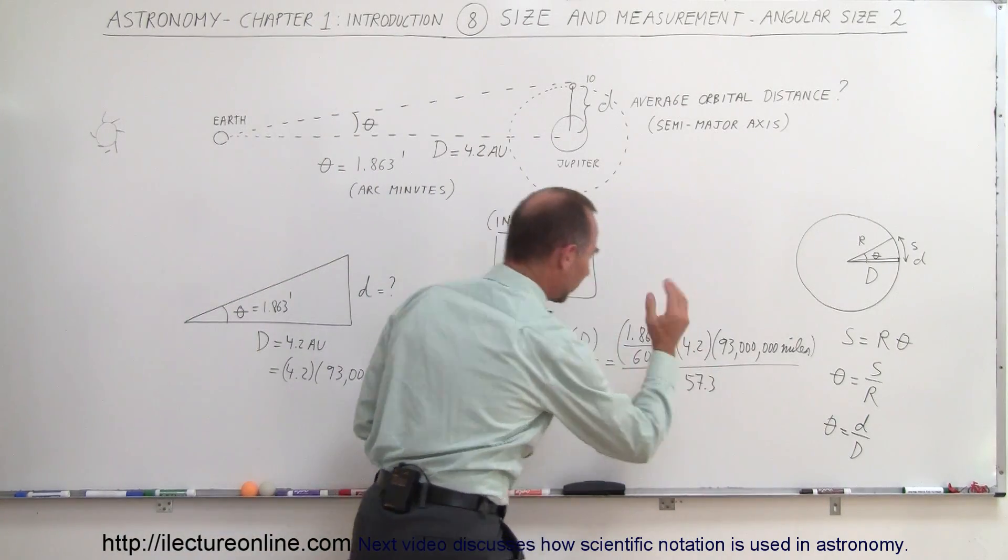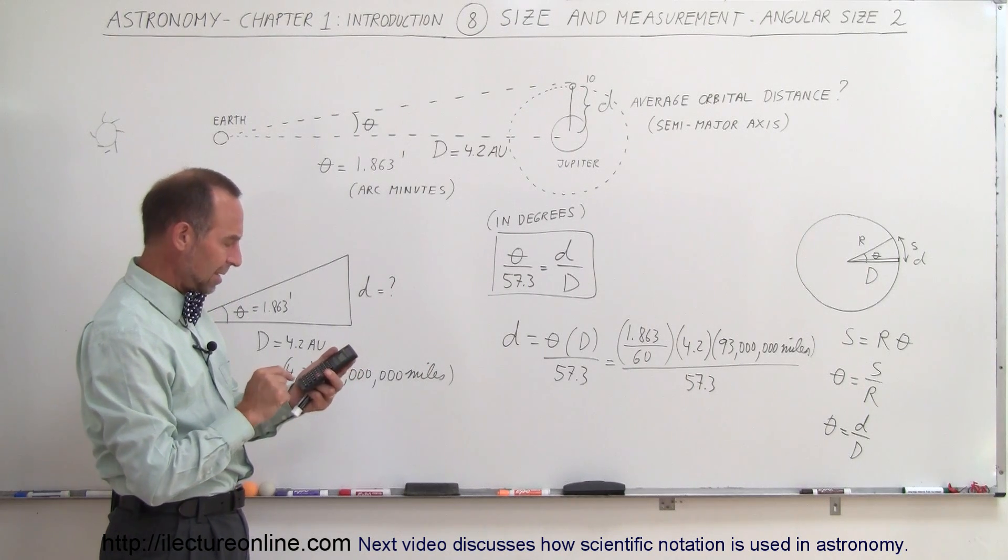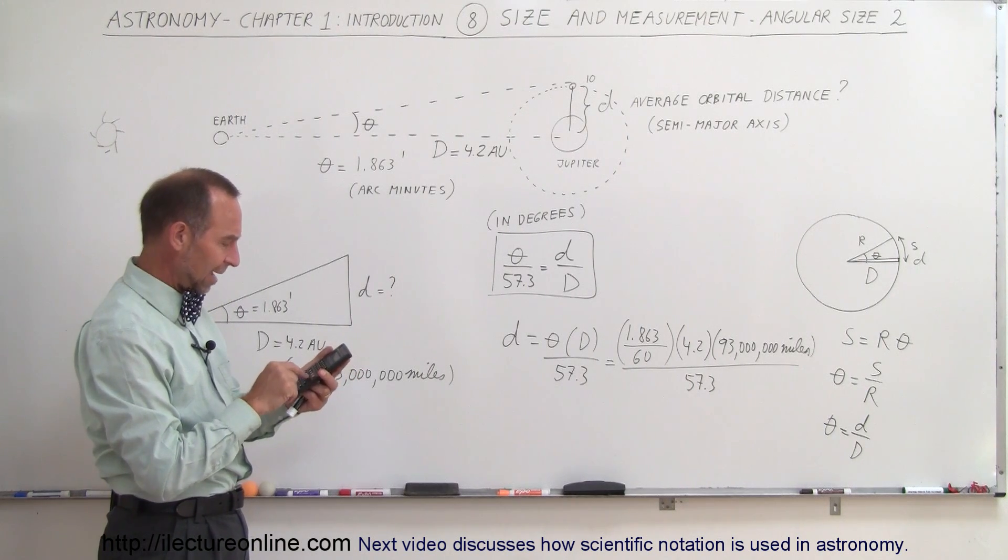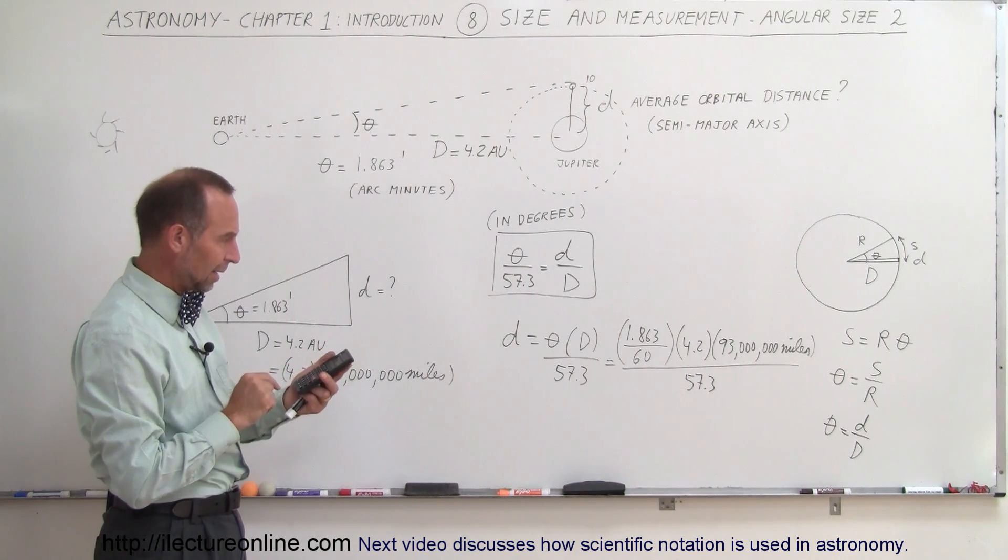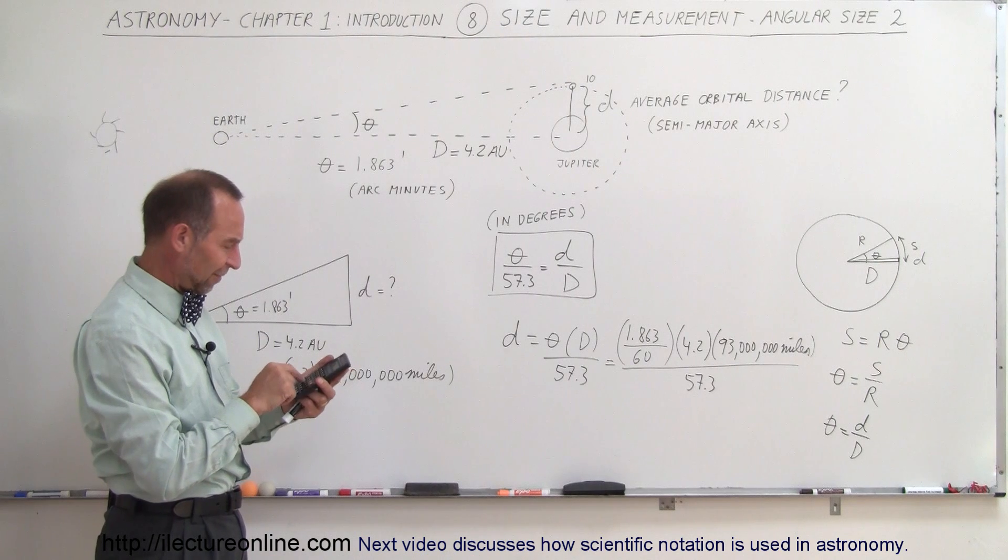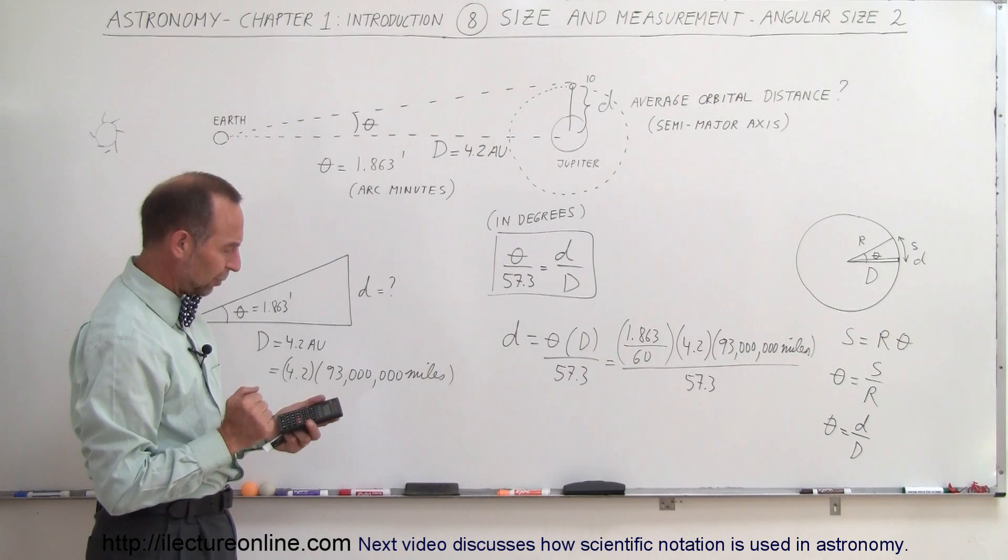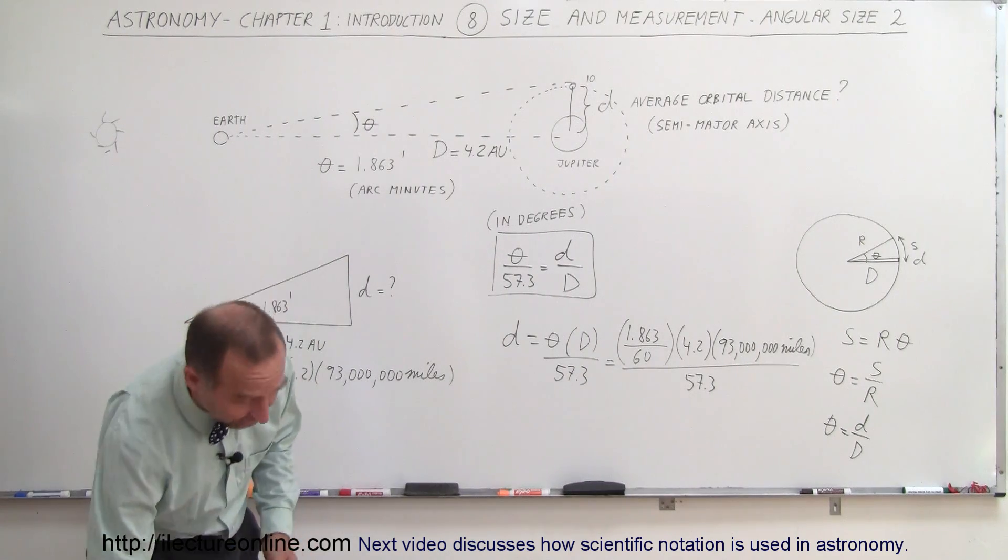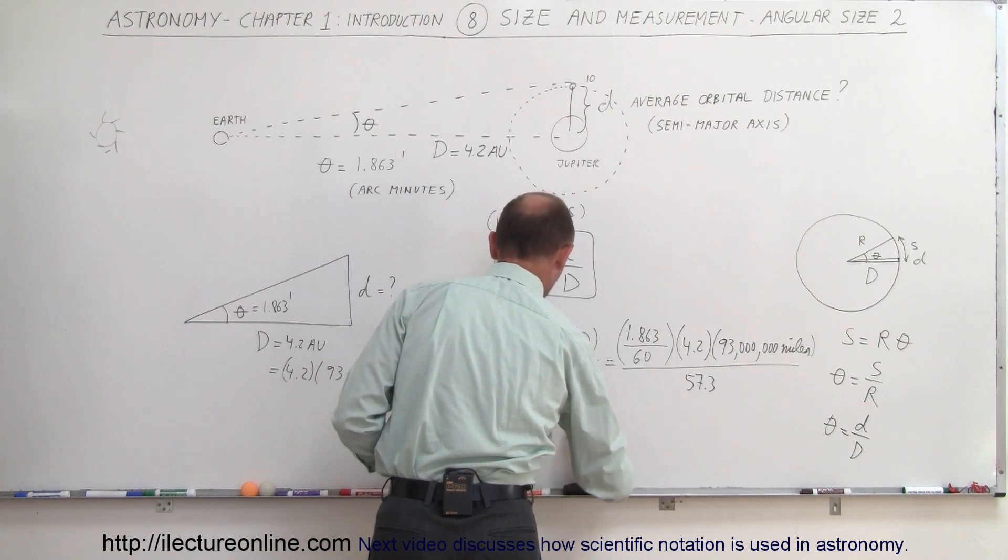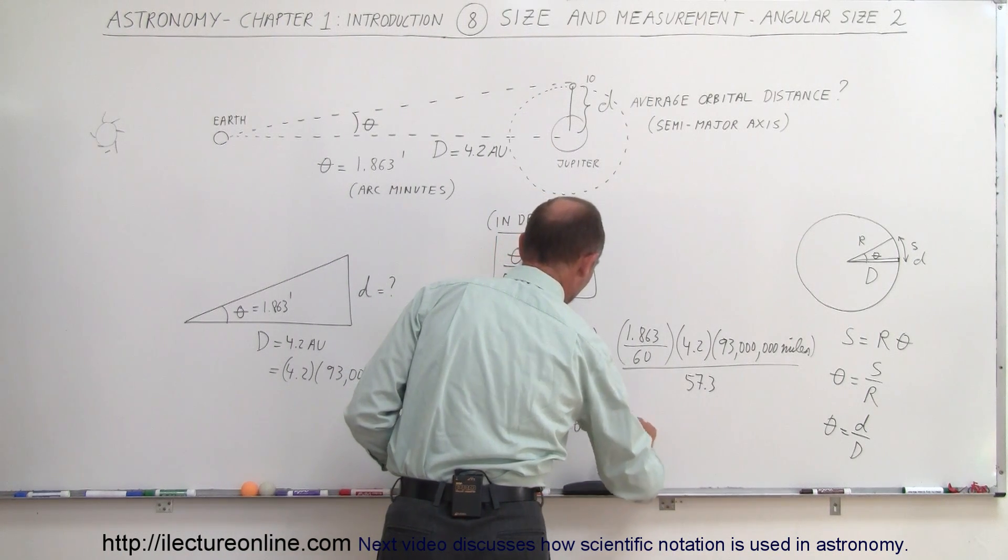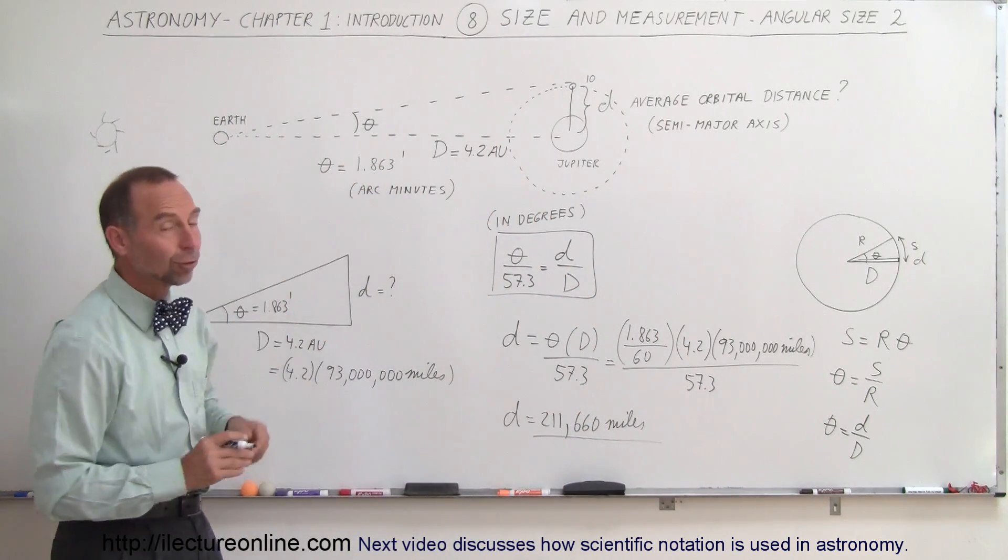Okay, well, I don't need that unit there because the units will cancel out except for miles. So let's try this. So we have 1.863 divided by 60 times 4.2 times 93 million and divide by 57.3. And that would be the orbital radius of Io going around Jupiter.